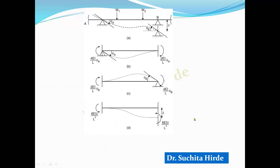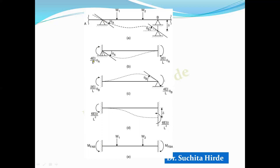There is external load also. If there is an external load, fixed end moments are developed. Whenever we analyze a beam or portal frame, initially we consider all the members as fixed beams and calculate fixed end moments due to the load. All these four factors contribute to the final moment at A. So the final moment MAB equals 4EI/L × theta A + 2EI/L × theta B − 6EI×delta/L², plus the fixed end moment MFAB.